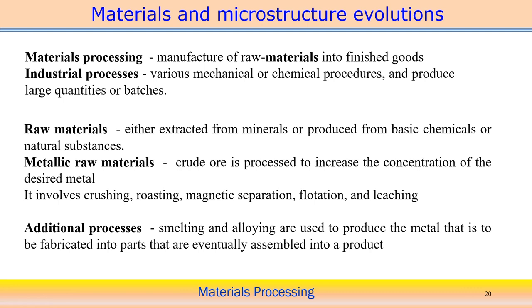Materials processing is basically a manufacturing process from raw materials to finished goods. In industrial processes, they actually follow various mechanical and chemical procedures, producing in large quantity and sometimes in batch quantity. In that case, we need to analyze and design a proper production system, and of course we need to analyze the different manufacturing processes and look into the options available.